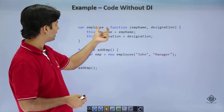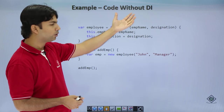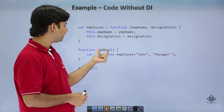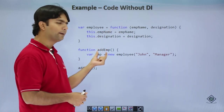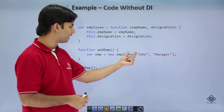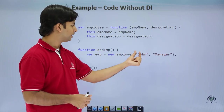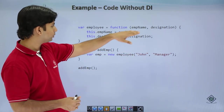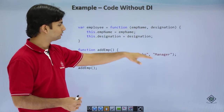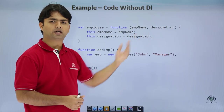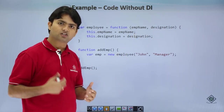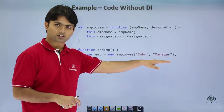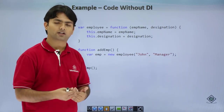Here you can see a code written without dependency injection. I have created a function called addEmployees inside which I have put hard-coded values like John and manager. Every time addEmp is called, the same values are rendered, and if I want to change the value I have to change the definition of the function, which is not ideal.